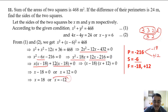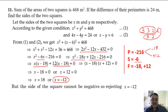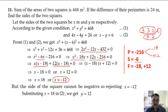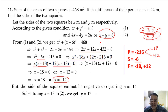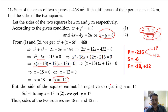We have to reject x equals minus 12. Why? Because the side of a square cannot be negative. So rejecting x equals minus 12, we get x equals 18. Substituting x equals 18 into equation 2, y equals x minus 6, we get y equals 12.